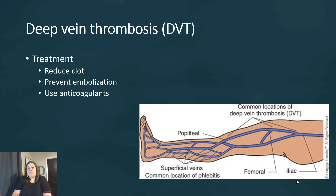When clots develop and inflammation is present in the blood vessels, treatment aims to reduce the clot and prevent it from becoming an embolus — breaking off and traveling elsewhere. Anticoagulant drugs are used to help break up the blood clot. This image shows common areas where DVT occurs and where vessel inflammation takes place.